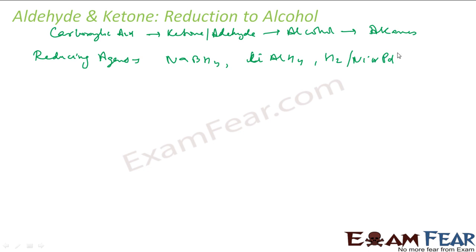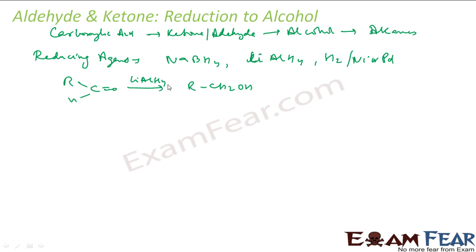For example, if I have an aldehyde and I use LiAlH4, what you get is RCH2OH. Even if you use hydrogen with nickel or platinum catalyst, you get the same thing. Now let's see the reaction mechanism with LiAlH4.